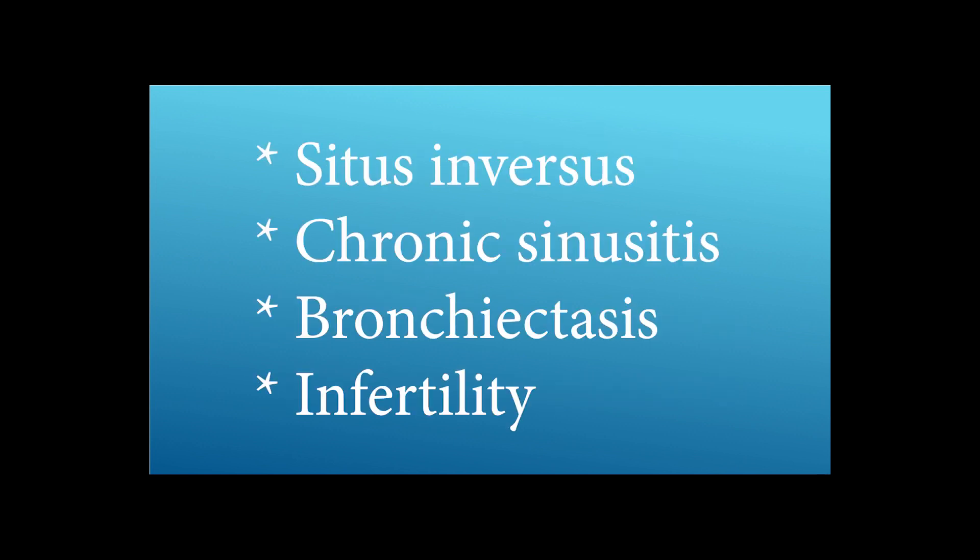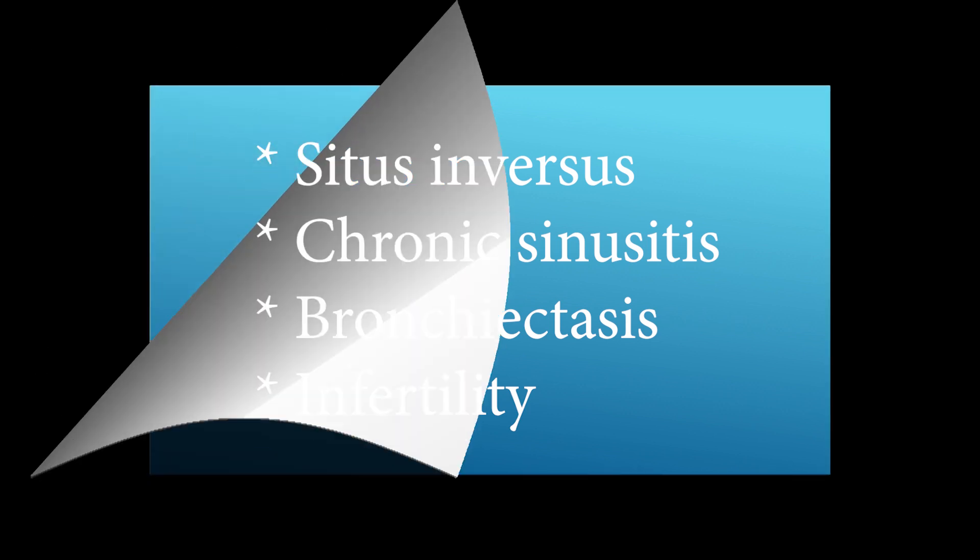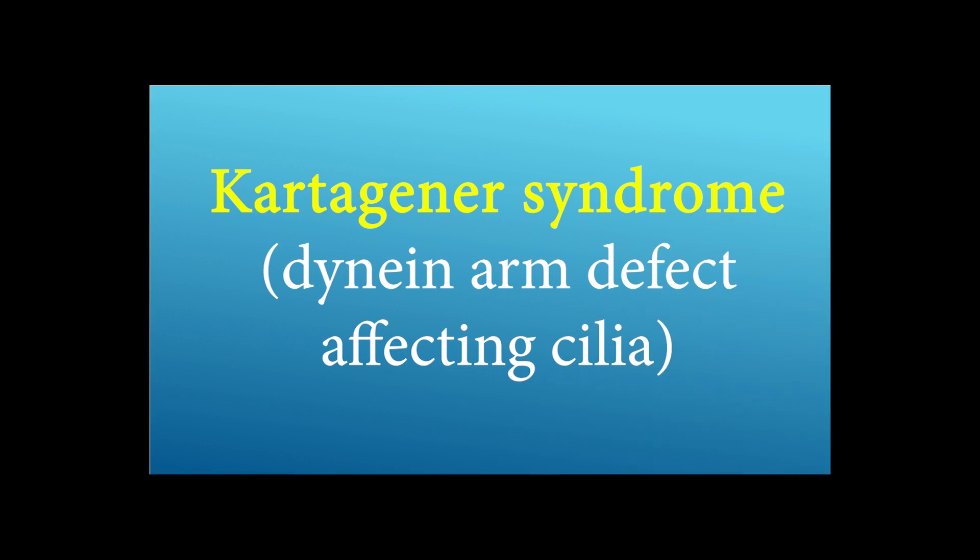Situs inversus, chronic sinusitis, bronchiectasis, and infertility. What is the diagnosis? The answer is Kartagener syndrome, a dynein arm defect affecting cilia.